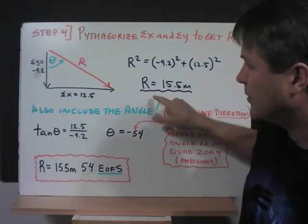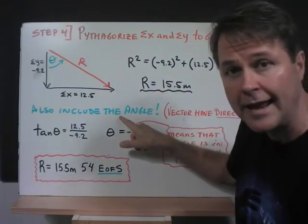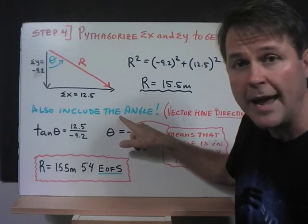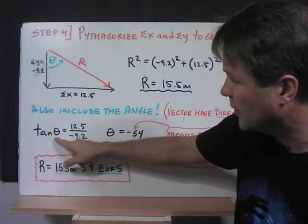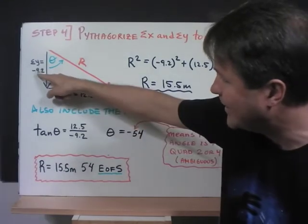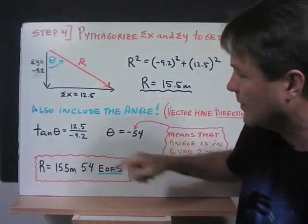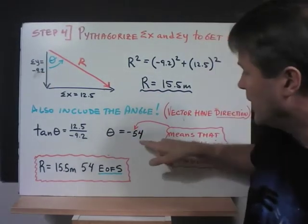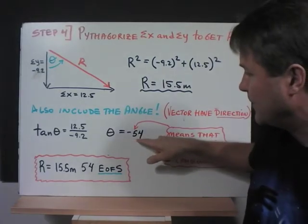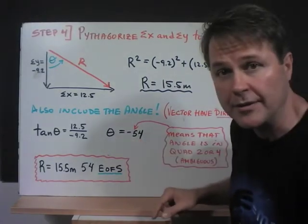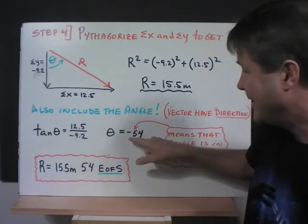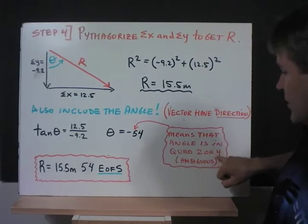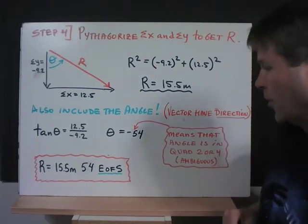Now R is a vector, so we also have to include an angle. Vectors include magnitude and direction. So we'll use the tan function and use the opposite and the adjacent, 12.5 divided by negative 9.2, and we'll end up getting a negative 54 degrees. Now the negative right there is ambiguous because the negative tells us that the angle is either in quadrant two or four, but we don't know which one.